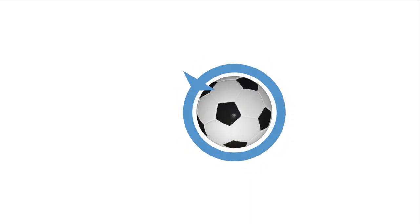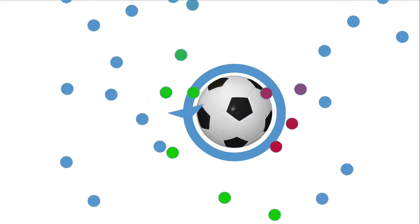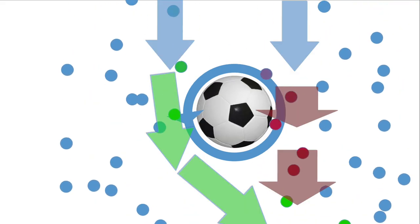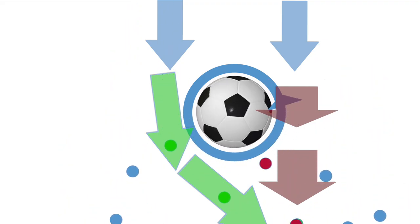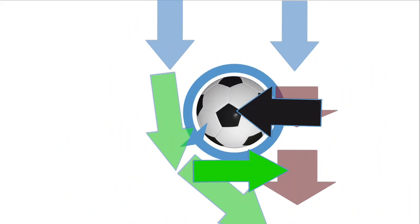Due to friction between the air and ball, spin creates a thin boundary layer of air, in which the air is dragged in the same direction as the ball's spin. This is important because as air particles approach the ball on the left side, particles are accelerated and deflected rightward, while particles on the right side are slowed down and remain straight.